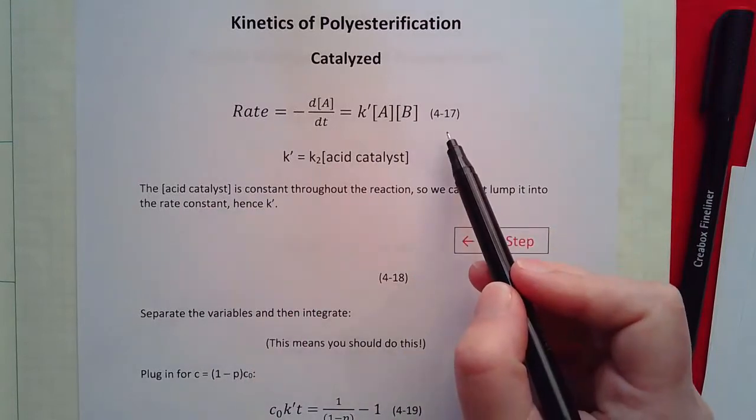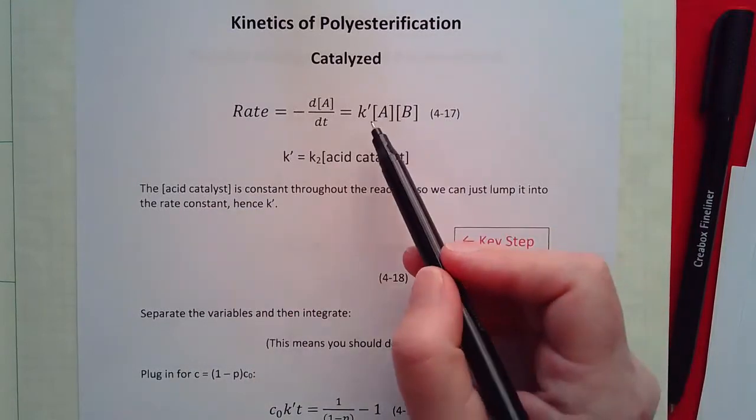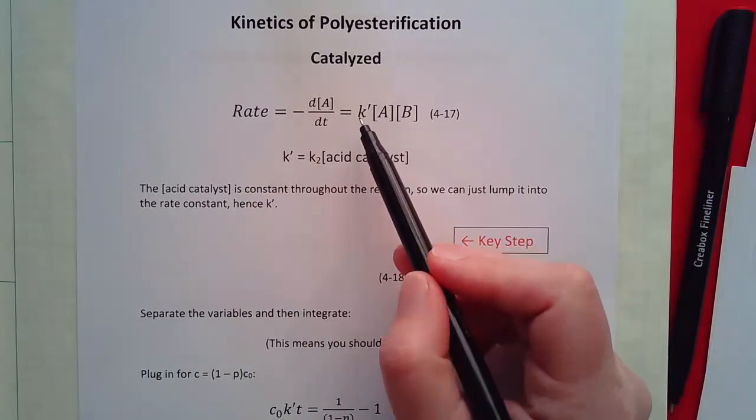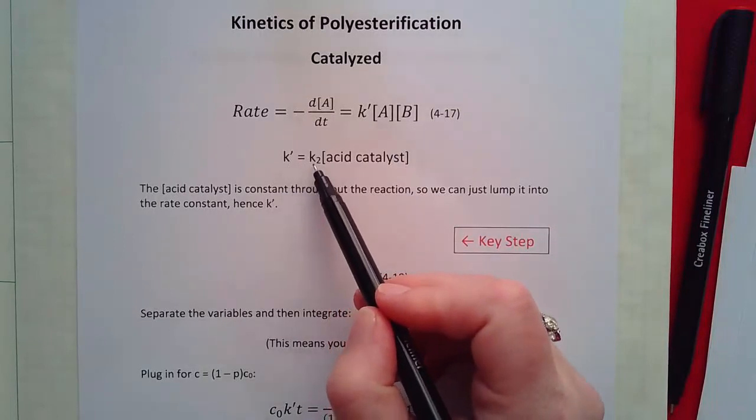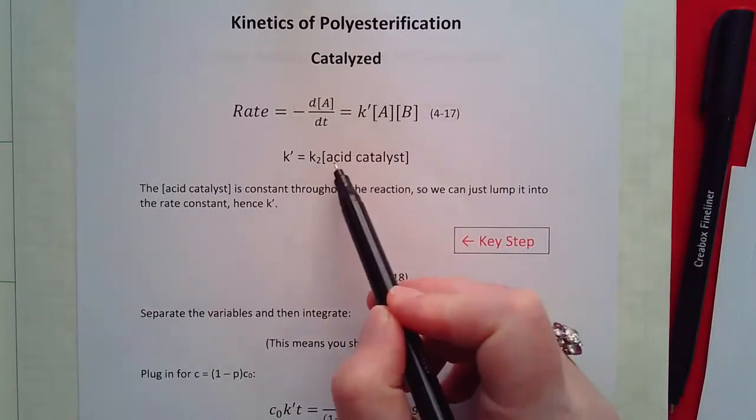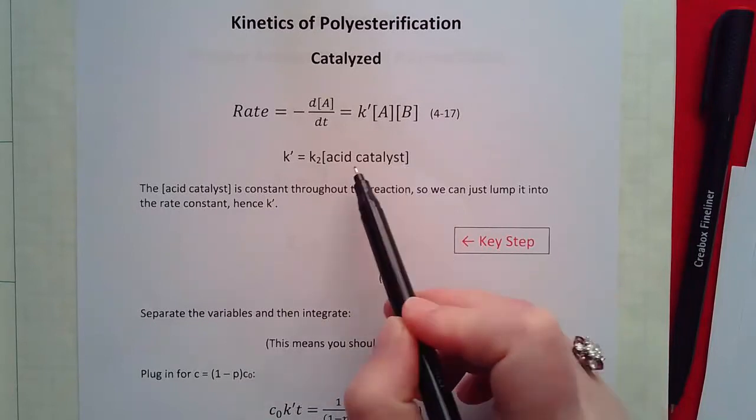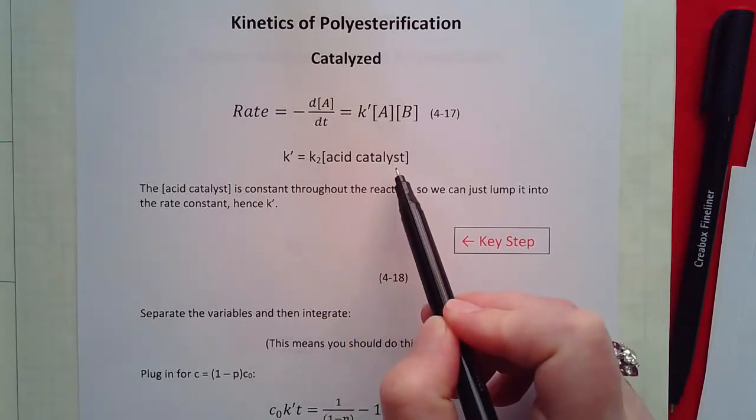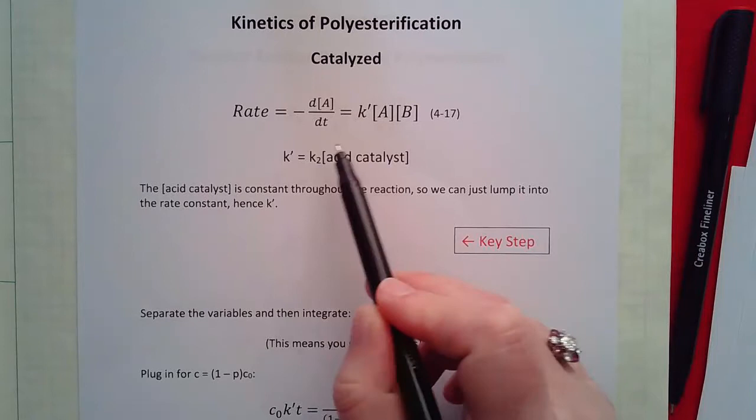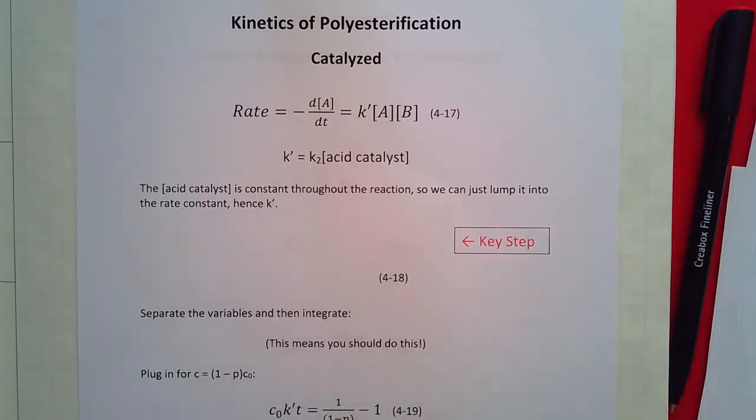Again, this is experimentally determined. K prime is equal to the second order rate constant times the acid catalyst concentration. And the acid catalyst concentration doesn't change with time so we can fold it in to make that rate constant.